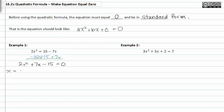x is equal to negative b plus or minus the square root of b squared minus four times a times c all over two a.